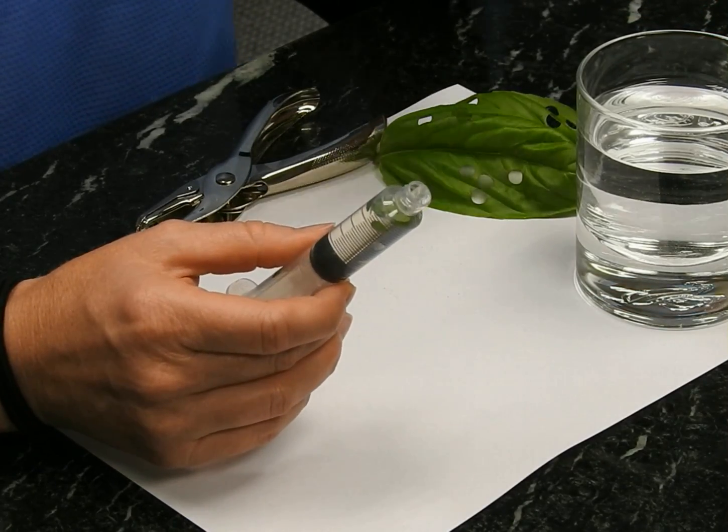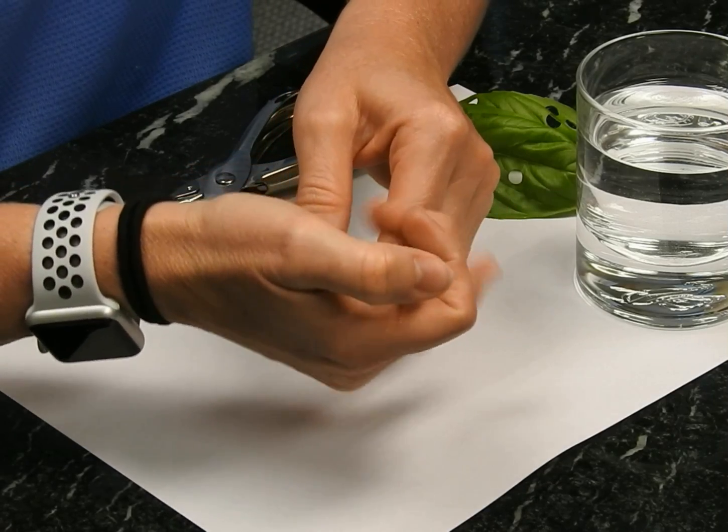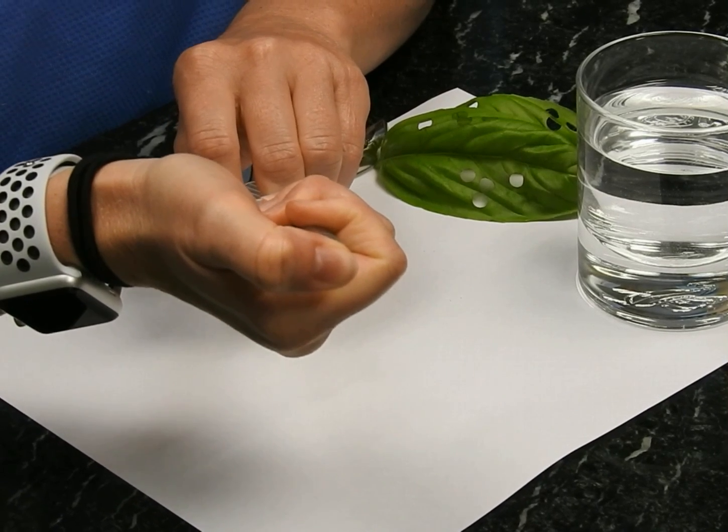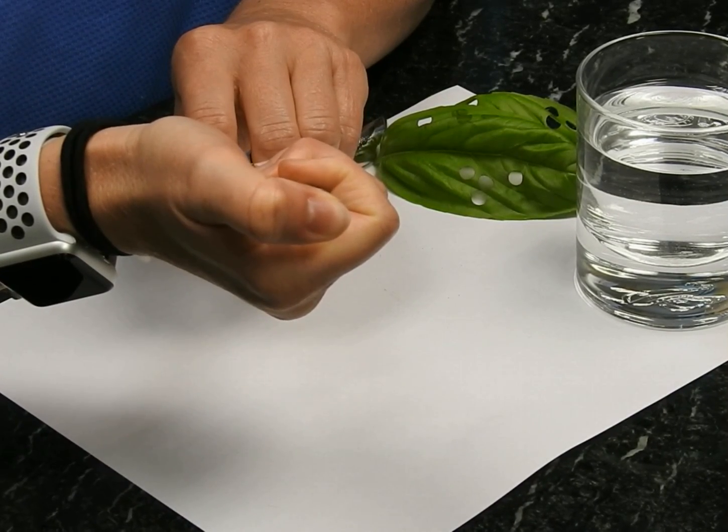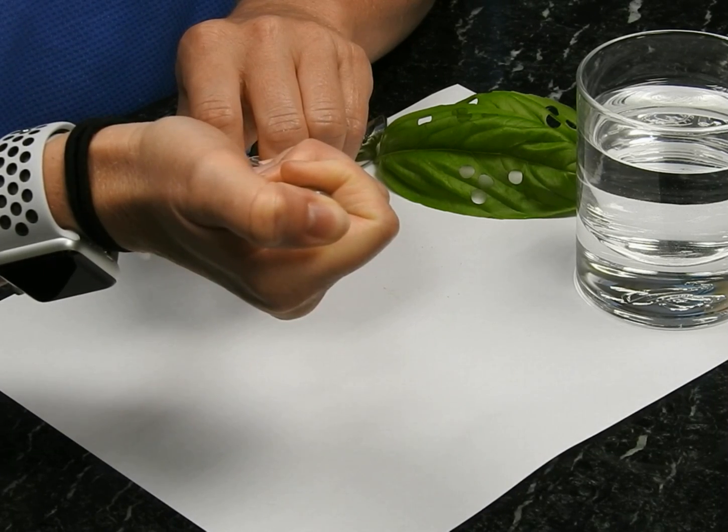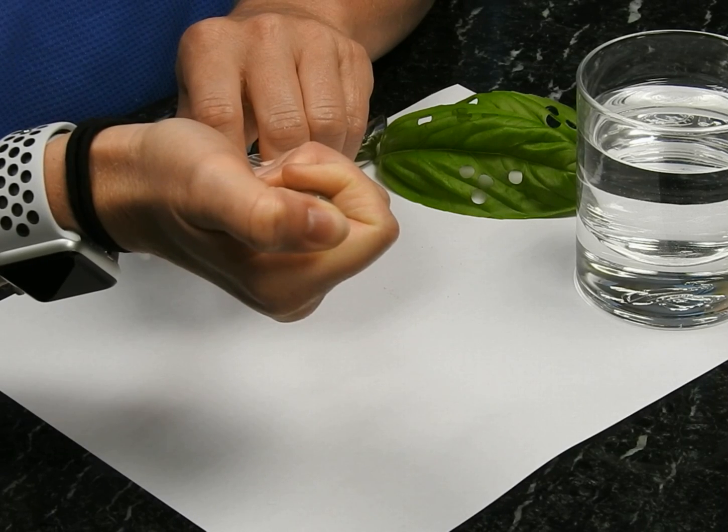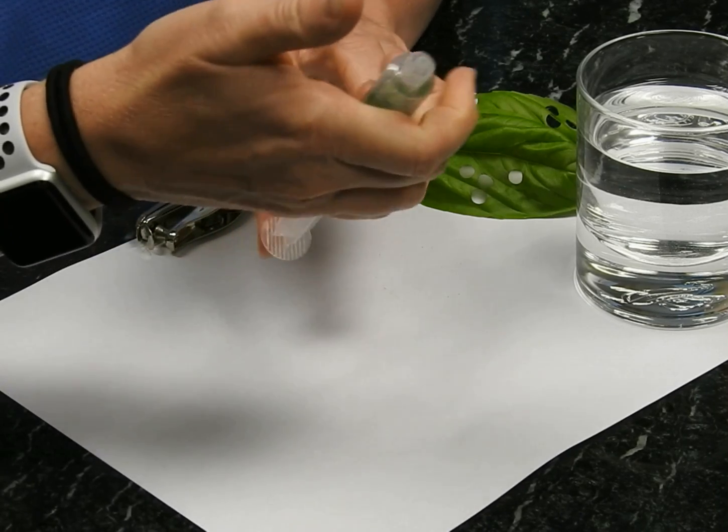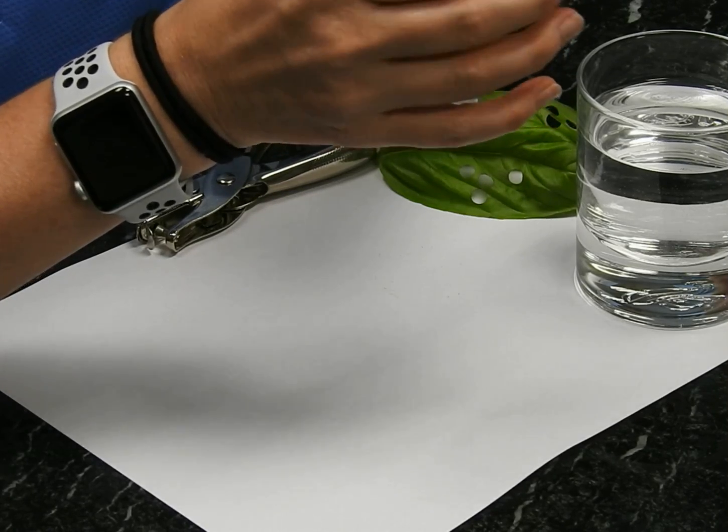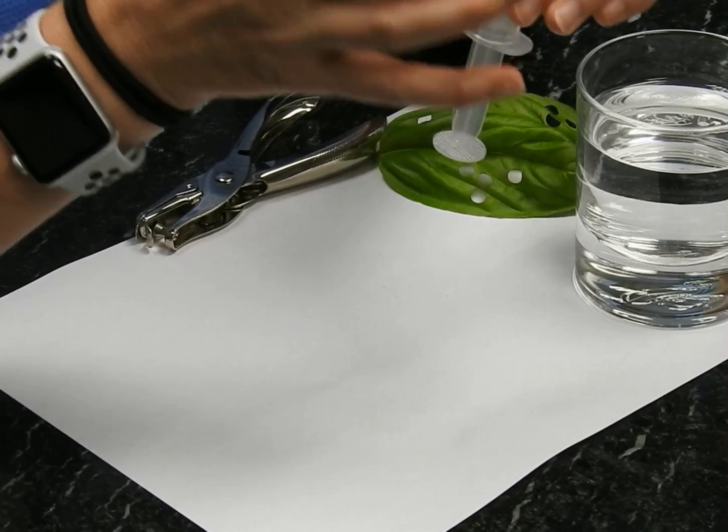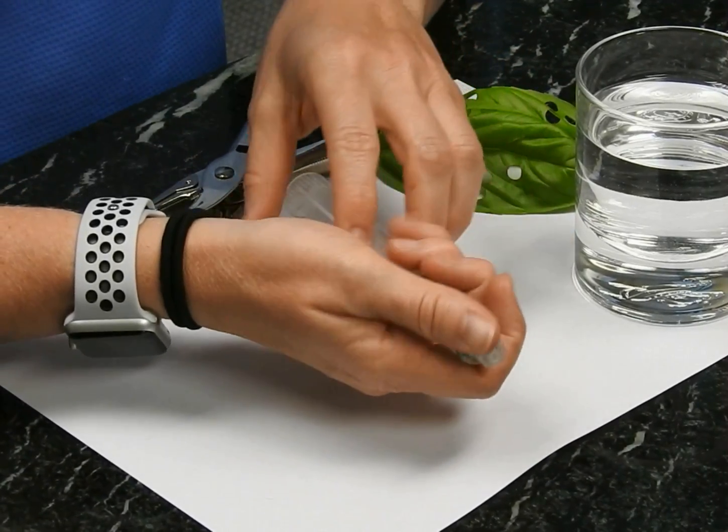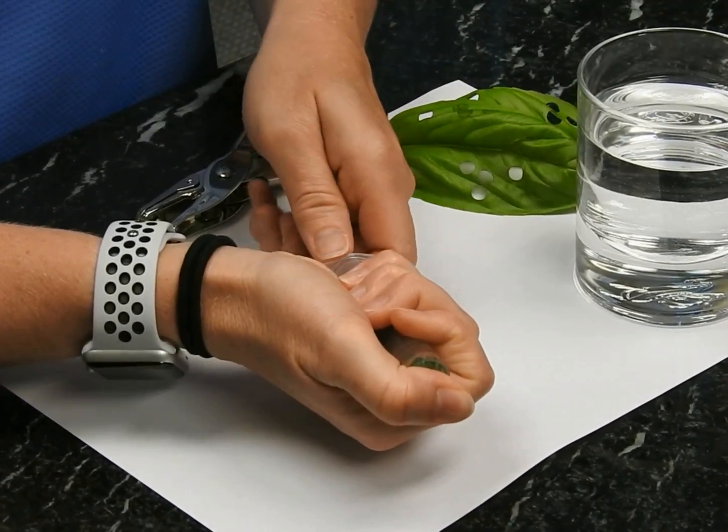So what we're going to do is apply a vacuum. Hold your thumb over the barrel like so, and then pull back to engage a vacuum. Hold this for about 10 seconds. When you let go, the syringe will pop back. We didn't get any to sink yet, so we're going to try this again.